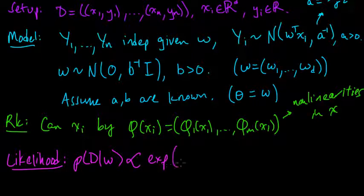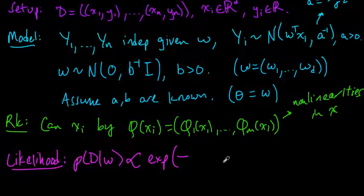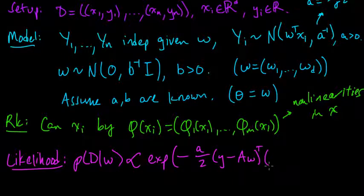The likelihood function is proportional to e to the minus, it's a over 2 now. It was 1 over 2 sigma squared before and now that becomes a over 2 times y minus a matrix Aw, transpose times y minus Aw.